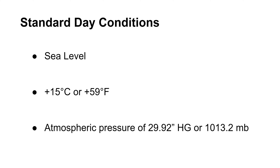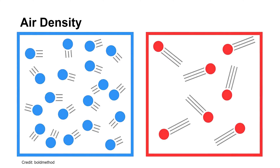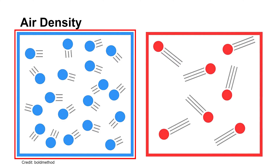Any deviations from these measurements will change the air density and will affect the performance of an aircraft. Visualize a certain volume of air — air molecules are predominantly oxygen and nitrogen. If air molecules are close to each other, as in this figure, the denser the air is. This will produce strong performance of an aircraft, as more air molecules will pass through its wings and will yield higher rates of climb, takeoff, and thrust.